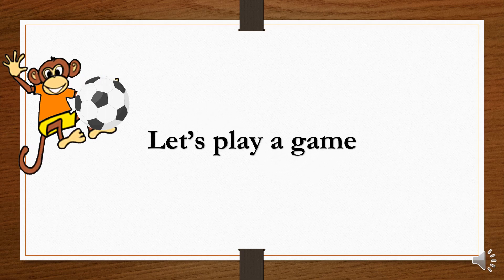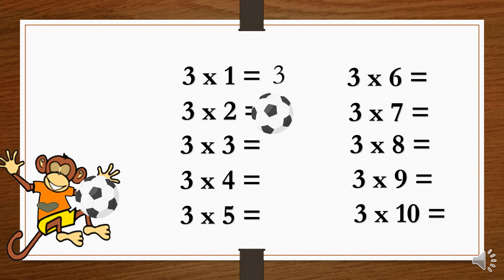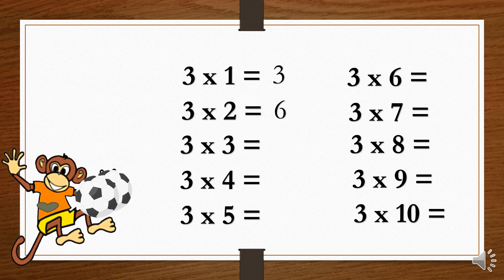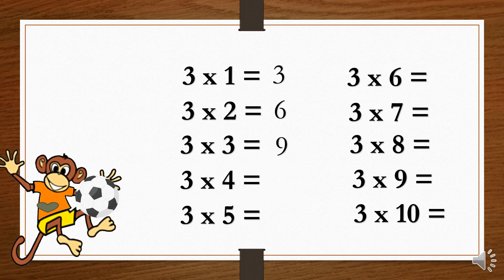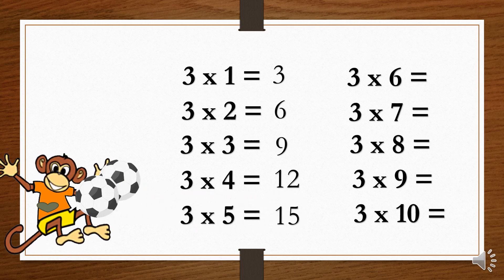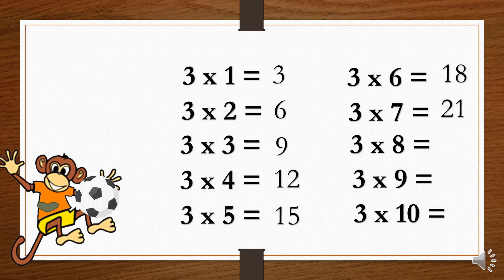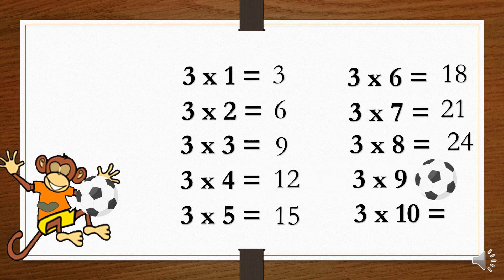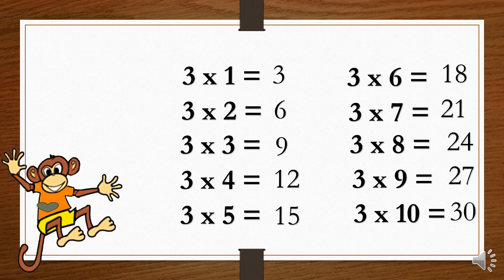Let's play a game! 3×1=3. 3×2=6. 3×3=9. 3×4=12. 3×5=15. 3×6=18. 3×7=21. 3×8=24. 3×9=27. 3×10=30.